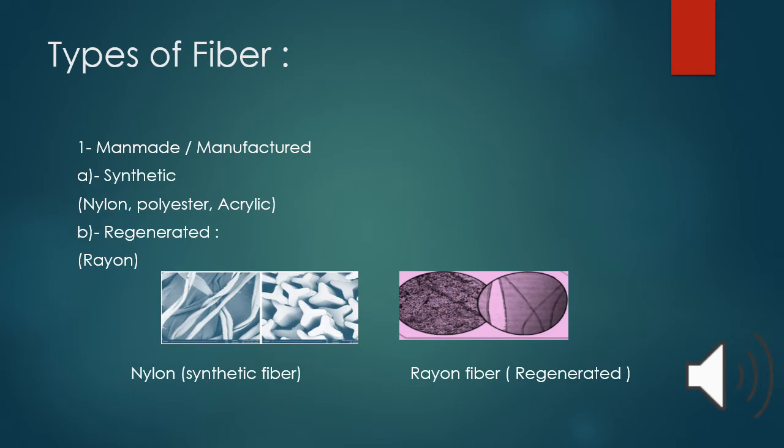Nylon is generally rough, strong, tough for textile application. Now the structure of rayon fiber is manufacturing fiber composed of regenerated cellulose as well as manufactured fiber composed of regenerated cellulose containing hydrogen and hydroxyl group. It absorbs more moisture than cotton.